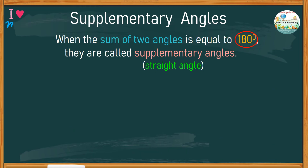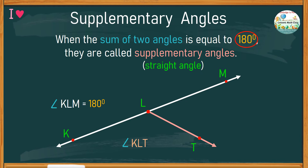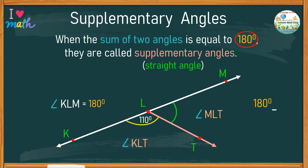Let's look at another example of supplementary angles. Study this straight angle KLM with a measurement of 180 degrees. If we split this angle into two by adding one side, we now have two angles and they are called supplementary angles. Let's name the side LT. Angle KLT is the supplement of angle MLT. If the measurement of angle KLT is 110 degrees, what would be the size of angle MLT? If these two angles together make 180 degrees, subtracted by 110, therefore the remaining angle is 70 degrees.